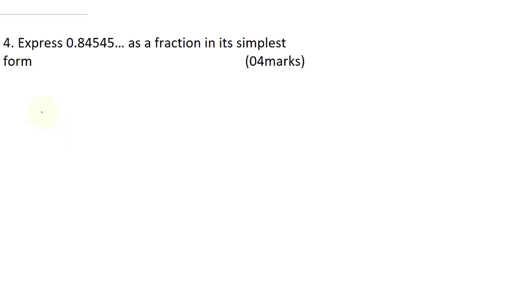Question 4 says, express 0.84545 repeating as a fraction. Now, let's equate x to be 0.84545. So, if you multiply both sides by 100, we're going to have 100x will be 84.545. So, I'm going to call this my equation 1, and I'll call this my equation 2, and I'll say equation 2 minus 1.